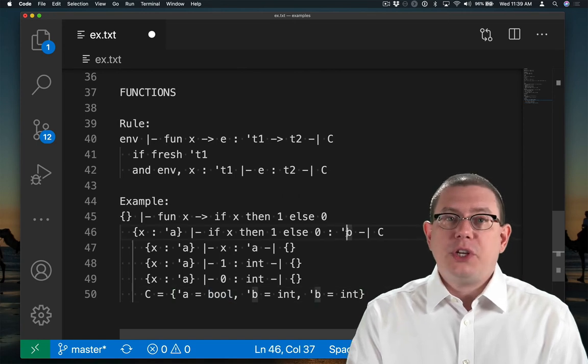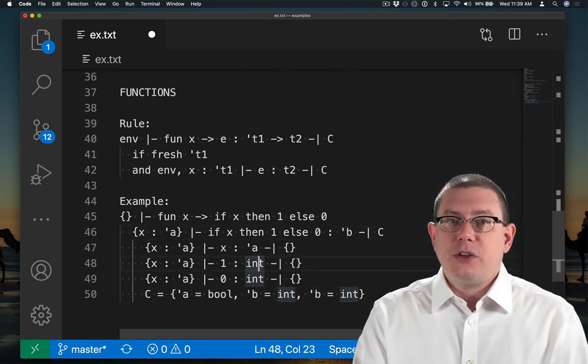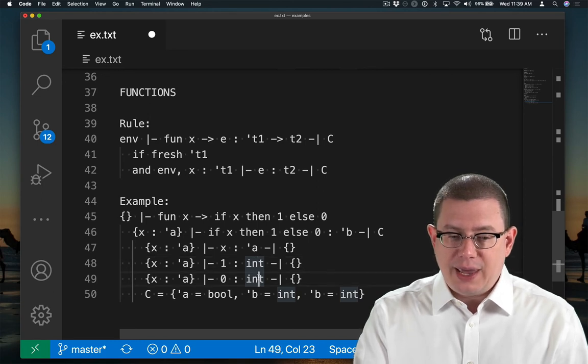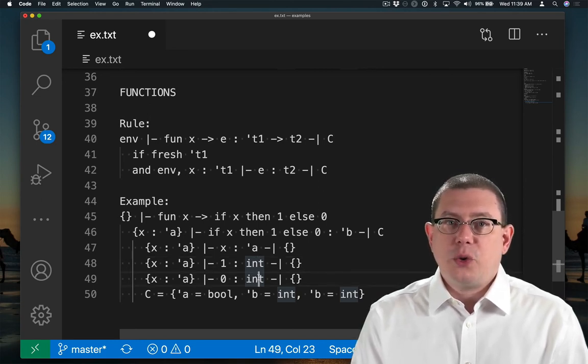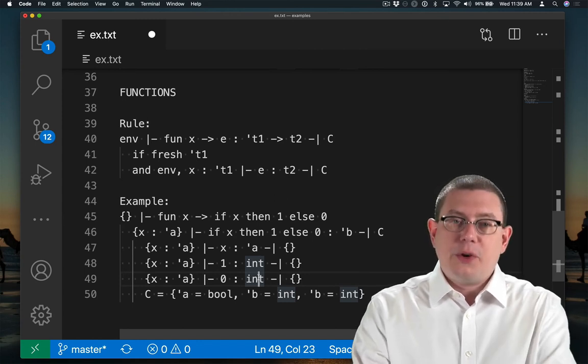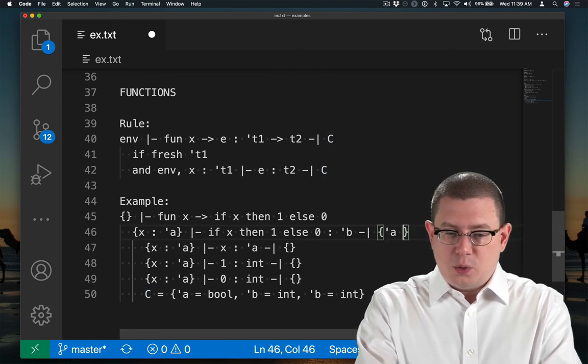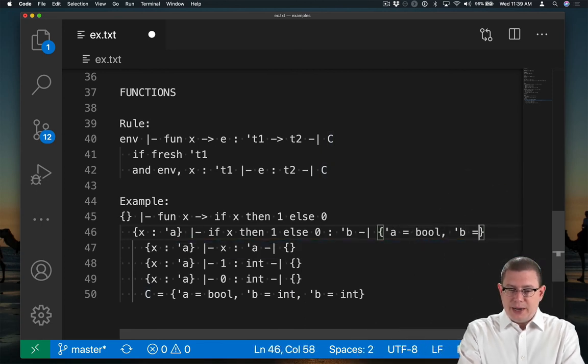So whatever type variable will be introduced here for the if expression, beta here must be equal to int because of the int showing up for the then branch. And again, equal to int because of the int showing up in the else branch. So as that set of constraints, then, if we wanted to simplify it a little bit, we could say that we're left with alpha equals bool and beta equals int.